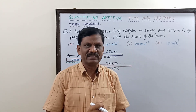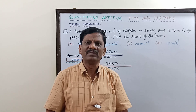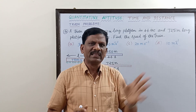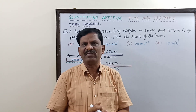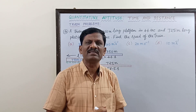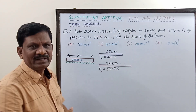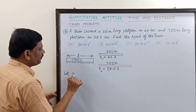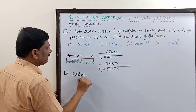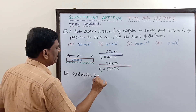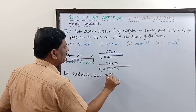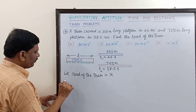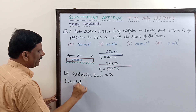The key concept here is that the train is not altering its speed. Only the lengths of the platforms are different and the times taken are different, but the speed of the train remains the same. Since the speed is not given, we let the speed of the train equal X.